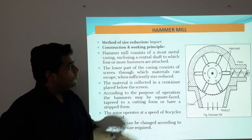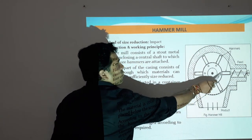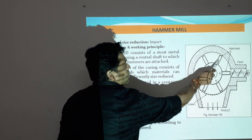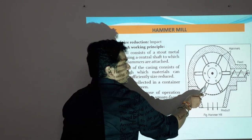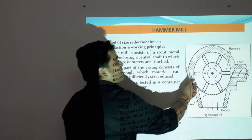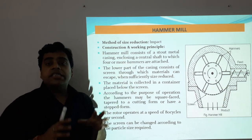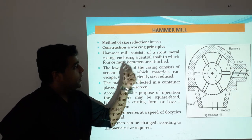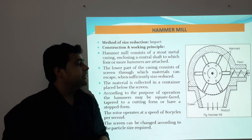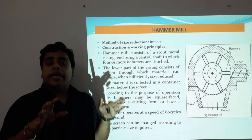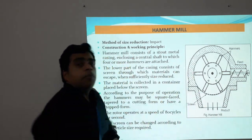This is the diagram of a hammer mill — the method of size reduction is impact. The basic construction is an enclosed system with a rotor, to which a number of hammers are attached. The hammers are heavy steel bars in square, longitudinal, or elongated shapes. The hammer mill consists of a stout metal casing enclosing a central shaft to which four or more hammers can be attached. The lower part of the casing consists of a screen through which the material escapes when sufficiently reduced in size. The product is collected in a container placed below the screen.